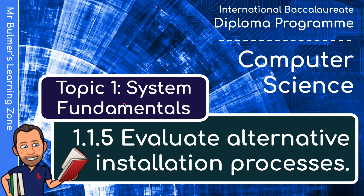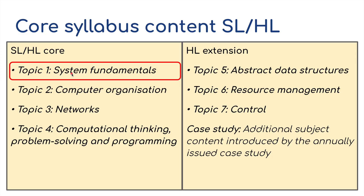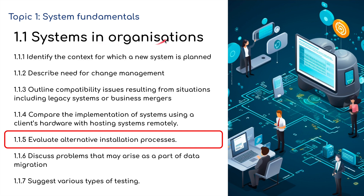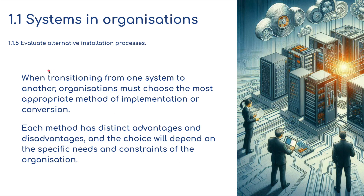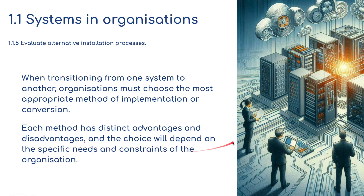Hello and welcome back to the fifth video in the series for Topic 1, System Fundamentals. This time we're going to be evaluating alternative installation processes. This is for the IB Diploma Programme in Computer Science. Topic 1 is still part of the core syllabus for standard level and higher level. When transitioning from one system to another, organisations must choose the most appropriate method of implementation or conversion. Each method has distinct advantages and disadvantages, and the choice will depend on specific needs and constraints of the organisation.